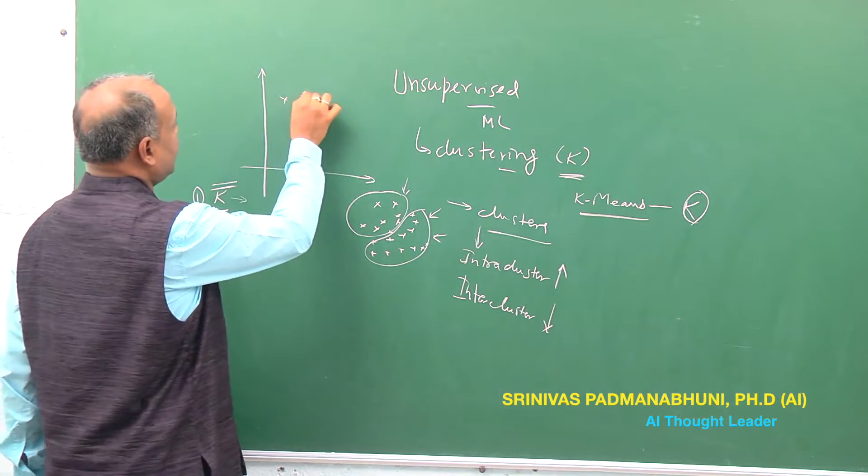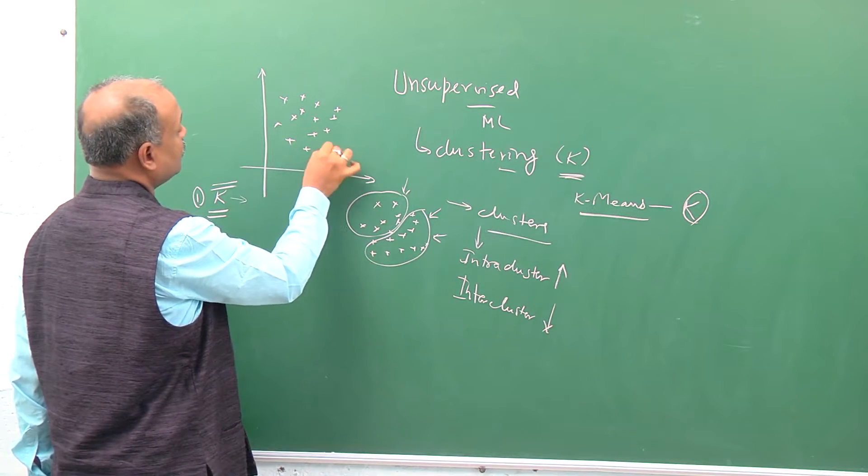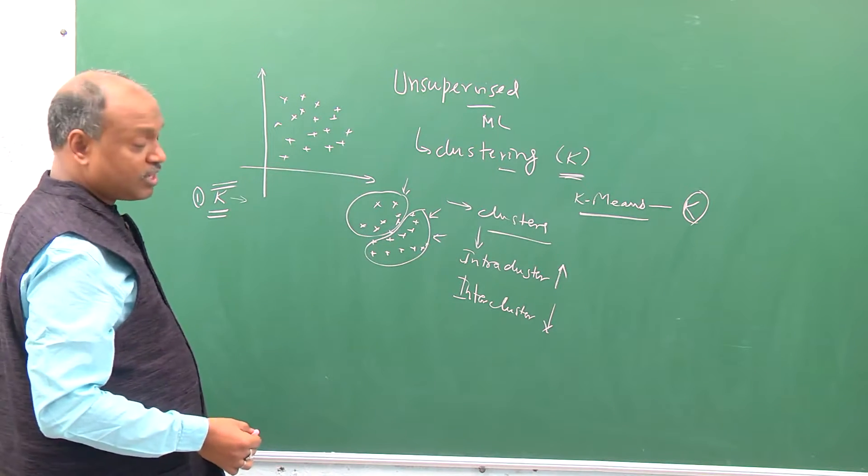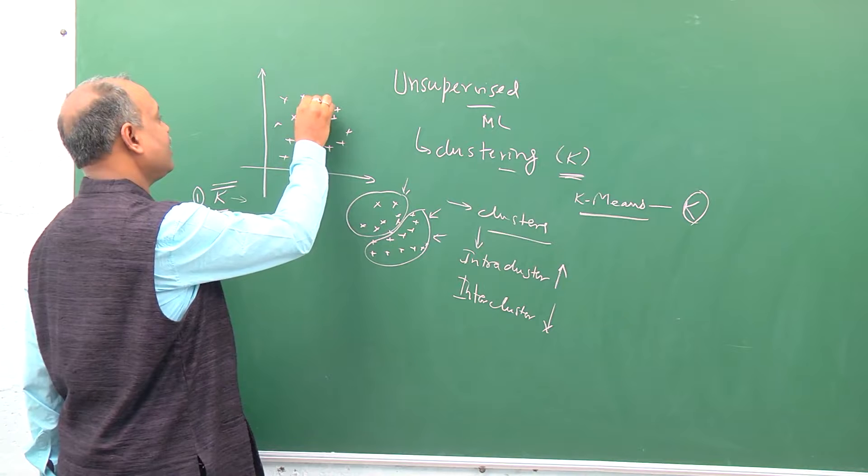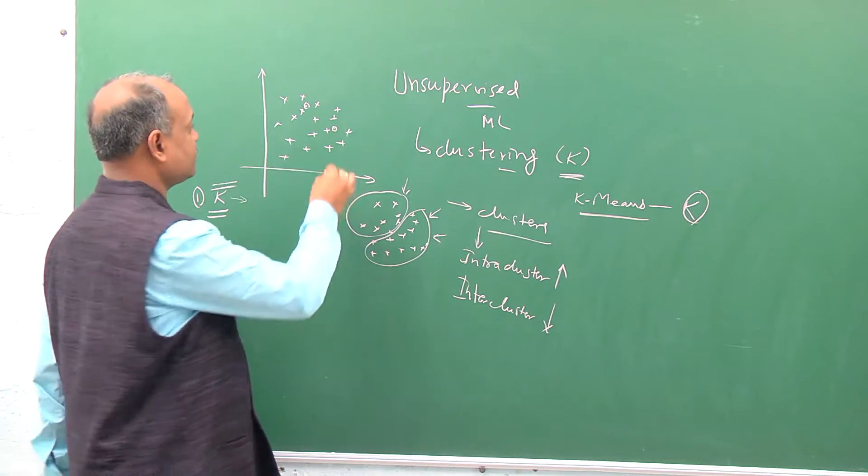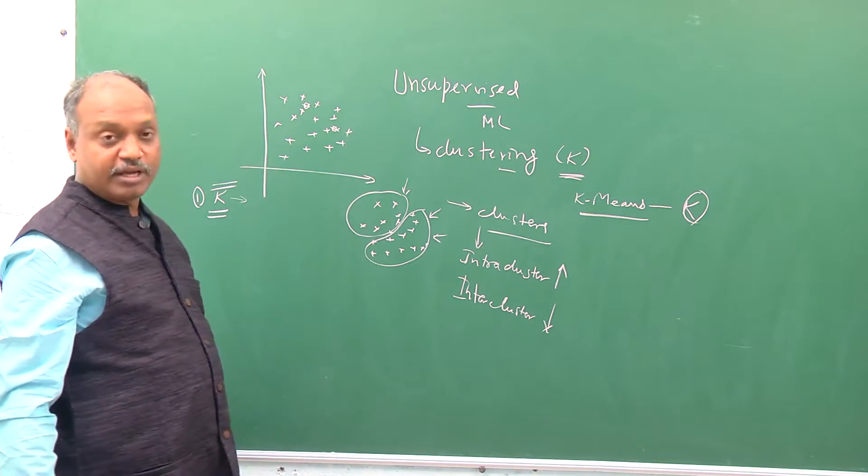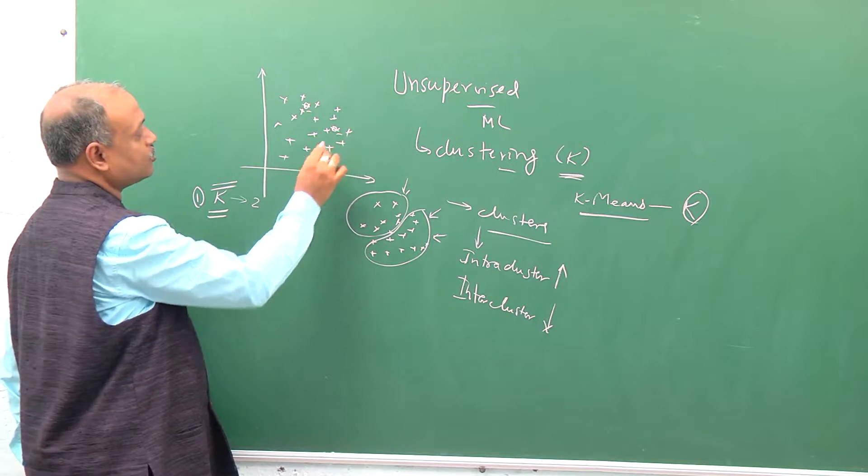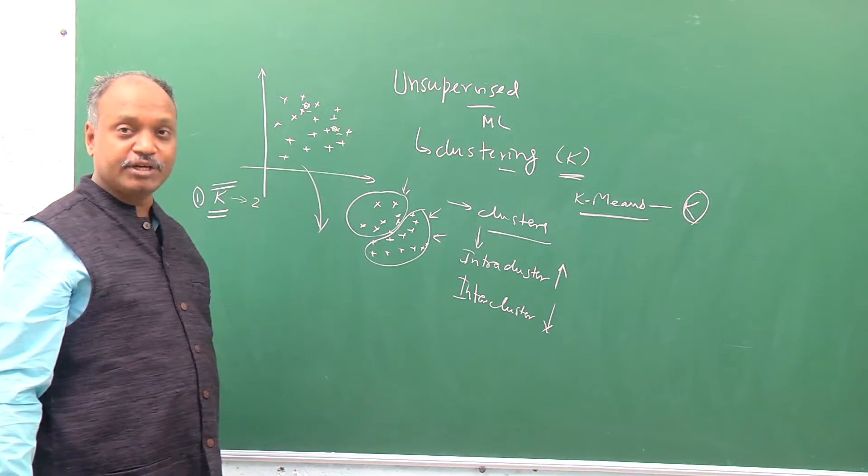Let's say k equals two, we're talking about forming two clusters. What we do is we start with first randomly taking two points and designate them as centroids. Let's take two random points among the data points as centroids. Because we're talking about two clusters, we have two centroids to start with.